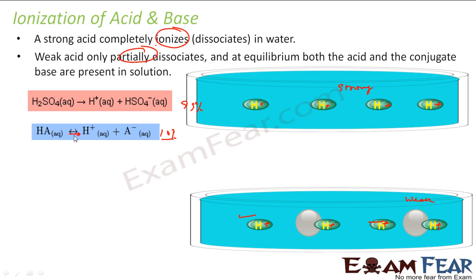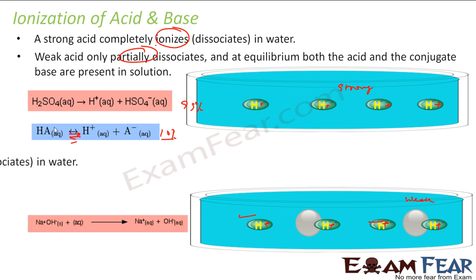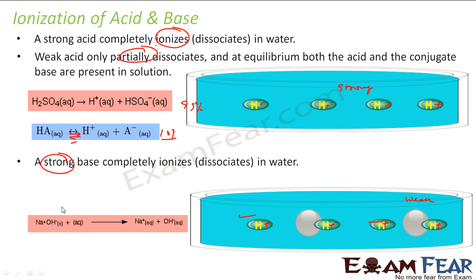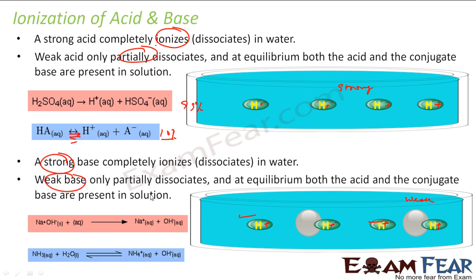In the case of a weak acid, the ionization is not complete, and that's why equilibrium exists — the reaction can happen in both the forward and backward direction. The same applies to bases: a strong base ionizes completely, so there is a one-sided reaction with no equilibrium, but a weak base partially dissociates and equilibrium exists. So when we talk about equilibrium, we talk about weak acid and weak base only.